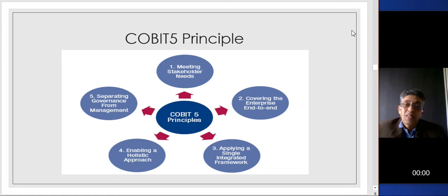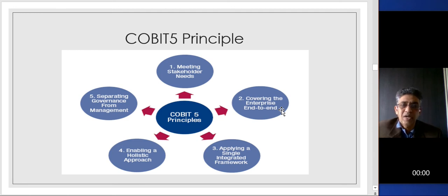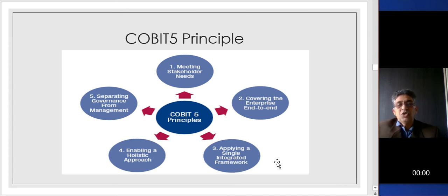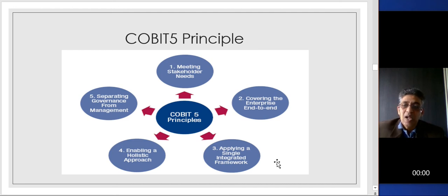Let's talk about the COBIT 5 principles. The first principle is meeting stakeholder needs — stakeholders can be internal or external, such as customers or governmental organizations. Second, covering the enterprise end-to-end, meaning it should be beneficial to the entire organization and customers. Third, applying a single integrated framework — it should be integrated with what the customer is using and what COBIT 5 prescribes. Fourth, enabling a holistic approach — a collaborative approach. Fifth, separating governance from management, which are entirely different things as we saw in the five domains and 37 processes.